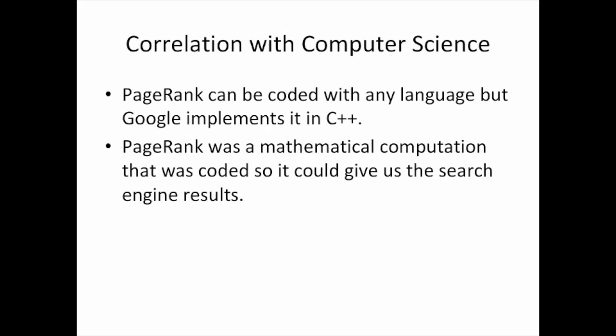So how does this correlate with my major, which is computer science? PageRank was eventually coded into C++, which is what Google uses, but it can be coded into any language, because there are tons of languages in computer science. PageRank was a mathematical computation that eventually was coded so that it could give us the search engine results that Google has.